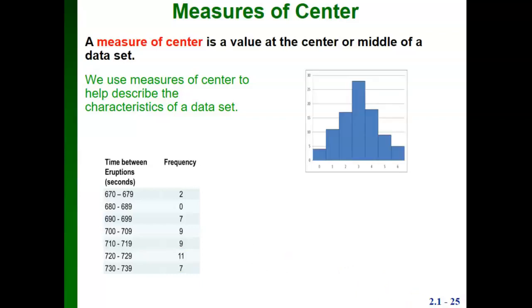If we have a histogram representing our data, then sometimes it's very easy to see where the center of the data set might be. In this histogram, notice that this is approximately bell-shaped. So the center of this histogram is right here in the middle of the graph. We would estimate that the center of our data would be at about the value 3.